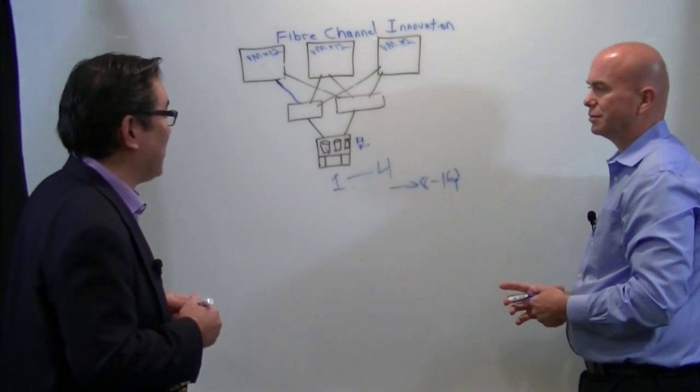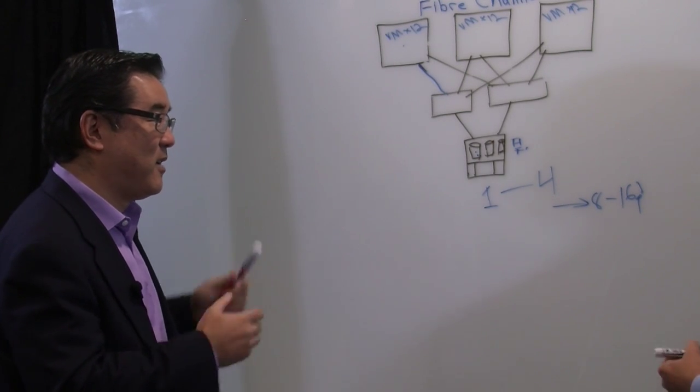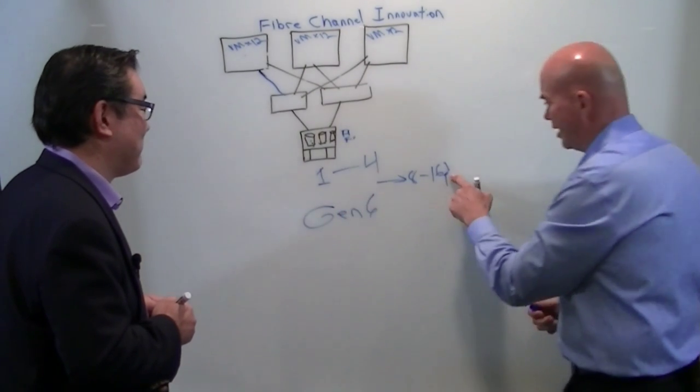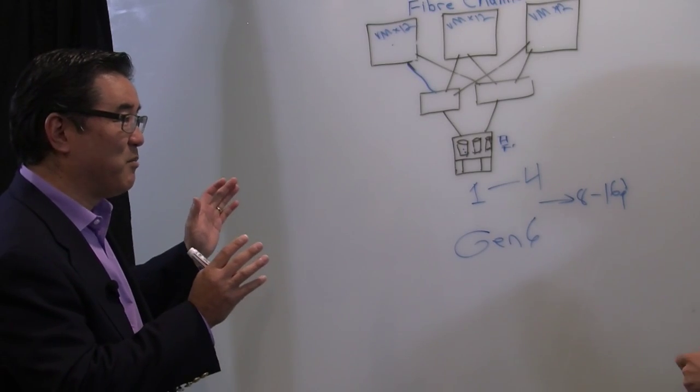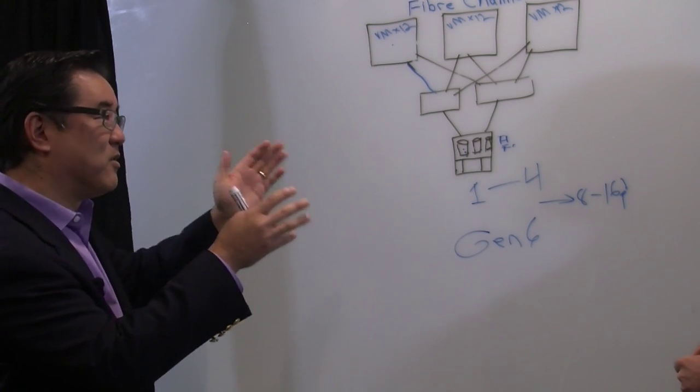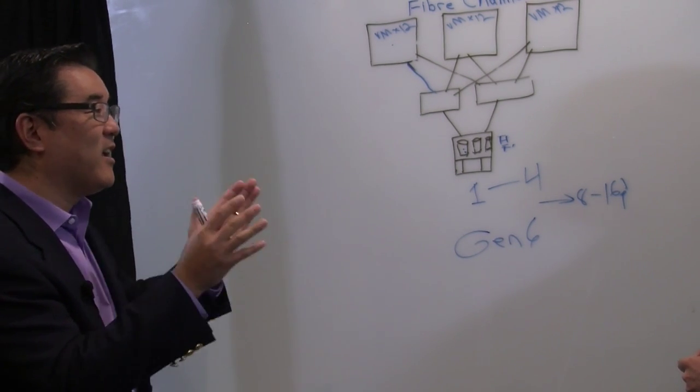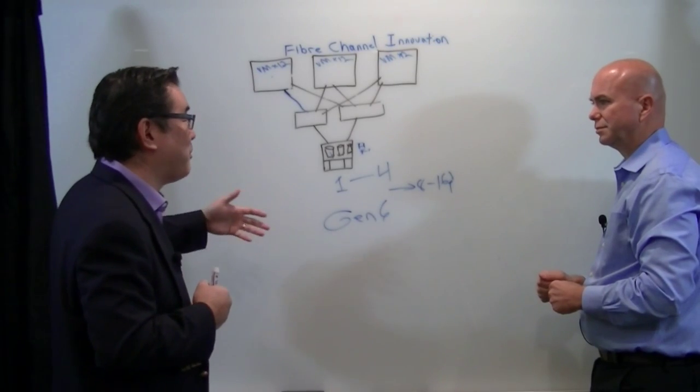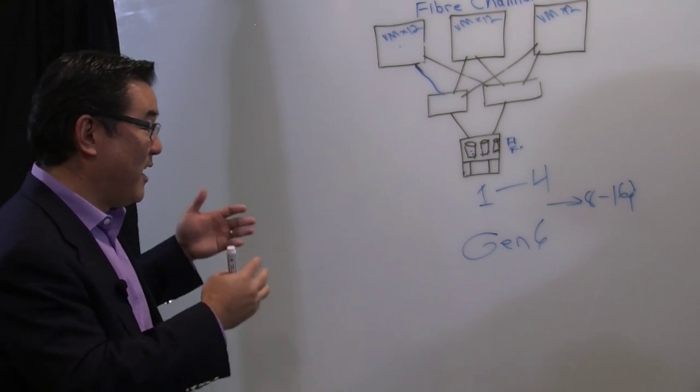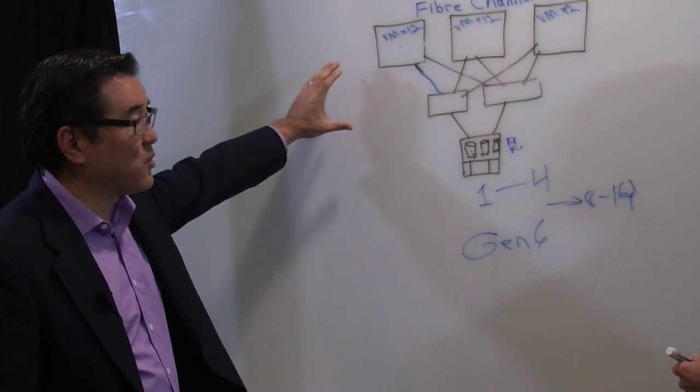So very recently we announced as an industry the intention to go to Gen 6 Fiber Channel. So Gen 6, that's going to be what exactly? We went with the gen-based naming because instead of just going to a single speed like we've done in the past from 1 to 2 and 2 to 4, we're going from 16 to 32 and 128. So in addition to the speeds themselves, there are also new features that are coming that really enhance the environments for customers that are deploying infrastructure like this. So more performance, more availability, more scalability to enable customers to really benefit from increased virtualization and the deployment of high performance storage.